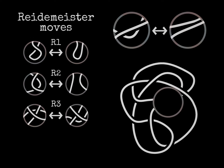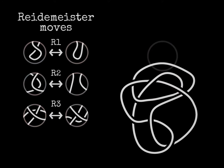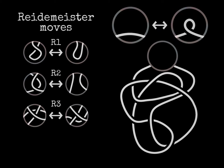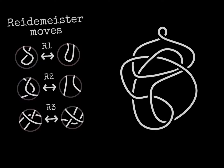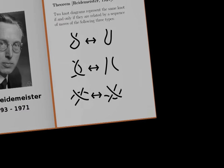The moves allow to turn deformations, a topological concept, into sequences of steps, a combinatorial concept. These moves on diagrams are named after Reidemeister, the mathematician who in 1927 published a proof that they described all the allowed deformations of knots.